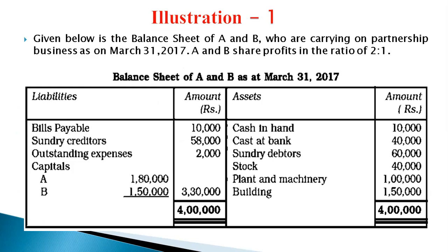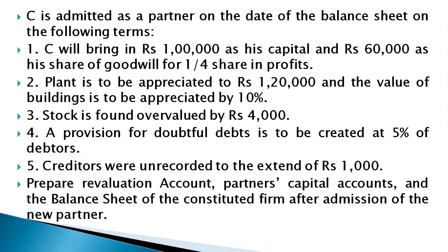Exercise 1: The balance sheet of A and B who are carrying on a partnership business as on 31st March 2017 is given. A and B share profit in the ratio 2:1 — this is their old ratio. On the asset side: cash in hand, cash at bank, sundry debtors, stock, plant and machinery, and building. On the liability side: bills payable, sundry creditors, outstanding expenses, and capital of both partners.